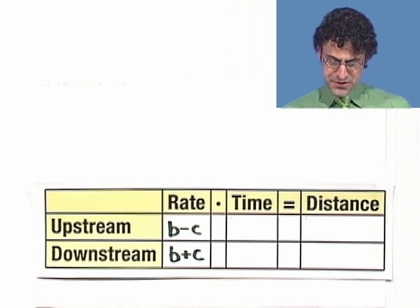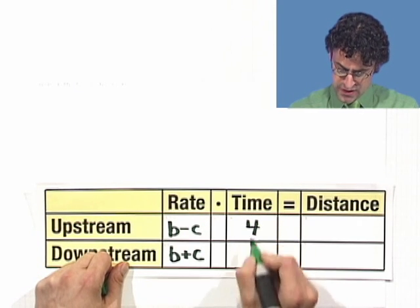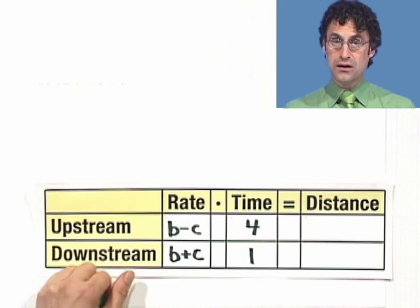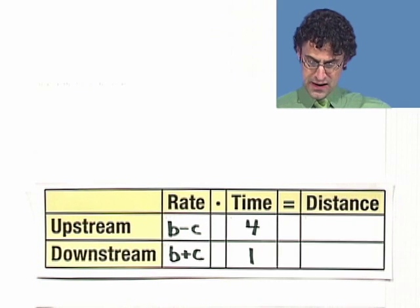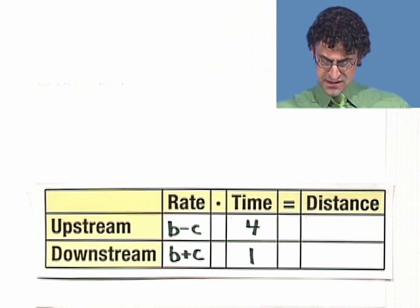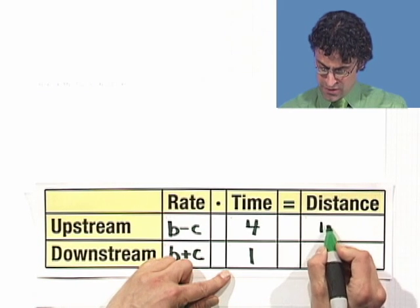Now we take the time. For upstream, it took him four hours. For downstream, he did it in a quick one hour. And what's the distance? Well the distance, in both cases, we're told, is 12, 12 miles.